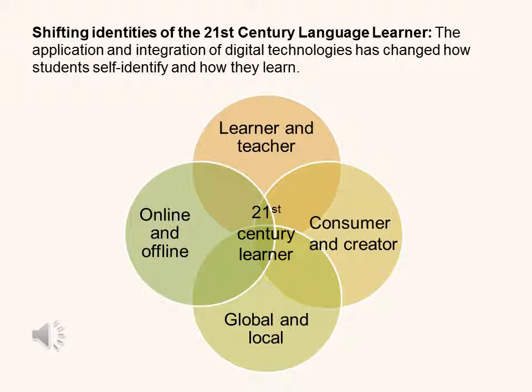I wanted to explore the impact of a technology-rich environment on a language learner. Through researching this essay, I came up with a typology investigating four aspects of learner identity: learner and teacher, consumer and creator, global and local, online and offline. This typology represents multiple identities which language learners may be inhabiting at any one time. It's not intended to be a definitive list or binary, just a lens through which to view learner experiences.